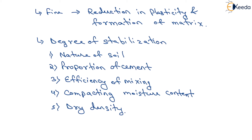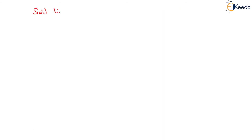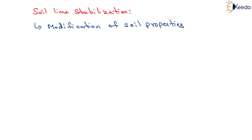We have discussed two techniques of soil stabilization. Now we will move towards the next technique, that is soil lime stabilization. When soils are treated with lime, either modification in soil properties, or binding, or both actions may take place. When we add lime in the soil, modification in the properties of soil will take place, or binding action will take place, or the combined action of both modification and binding will take place.